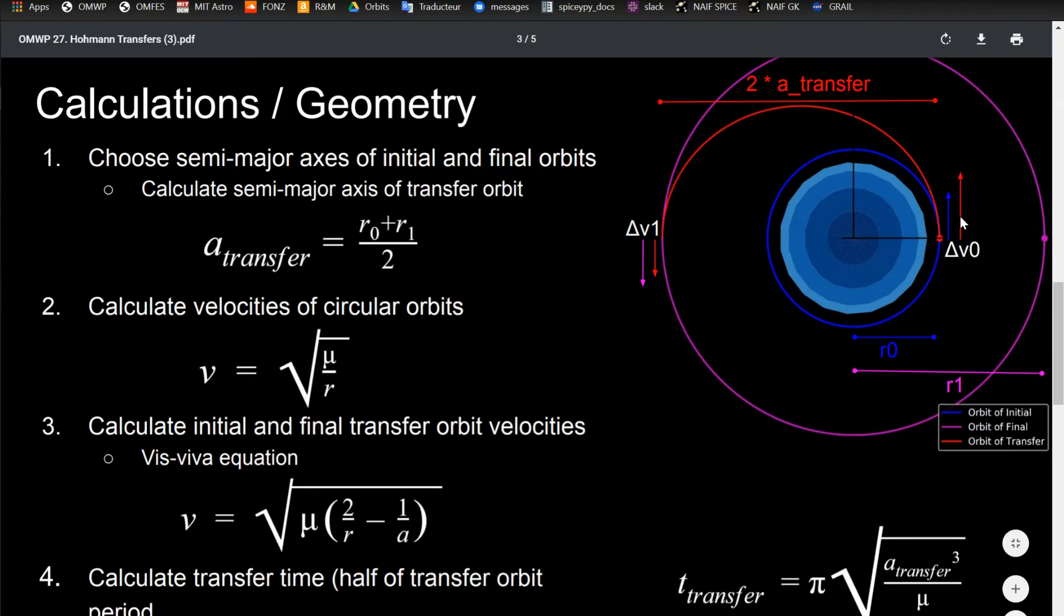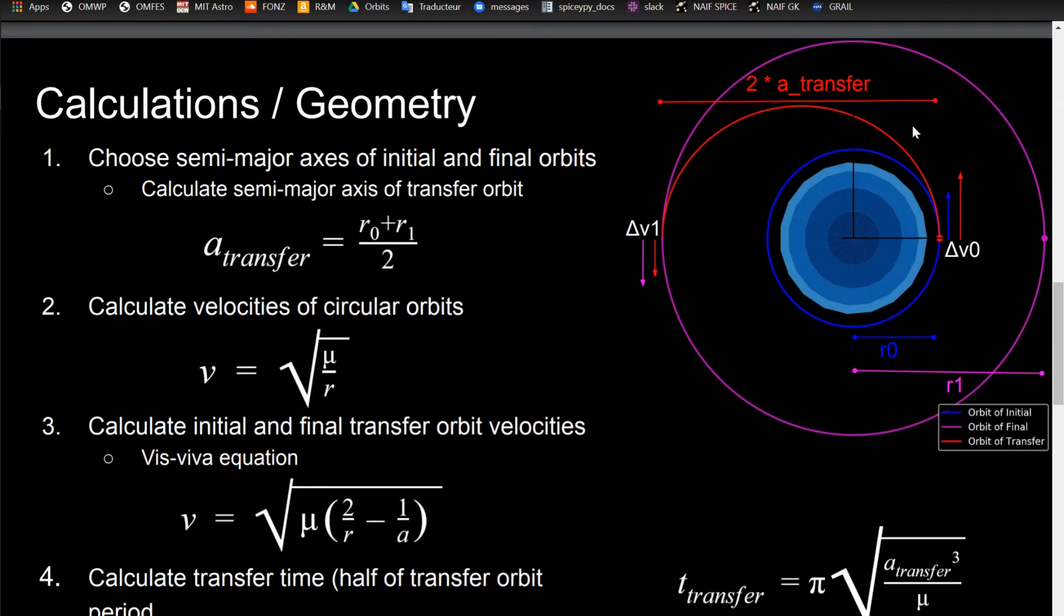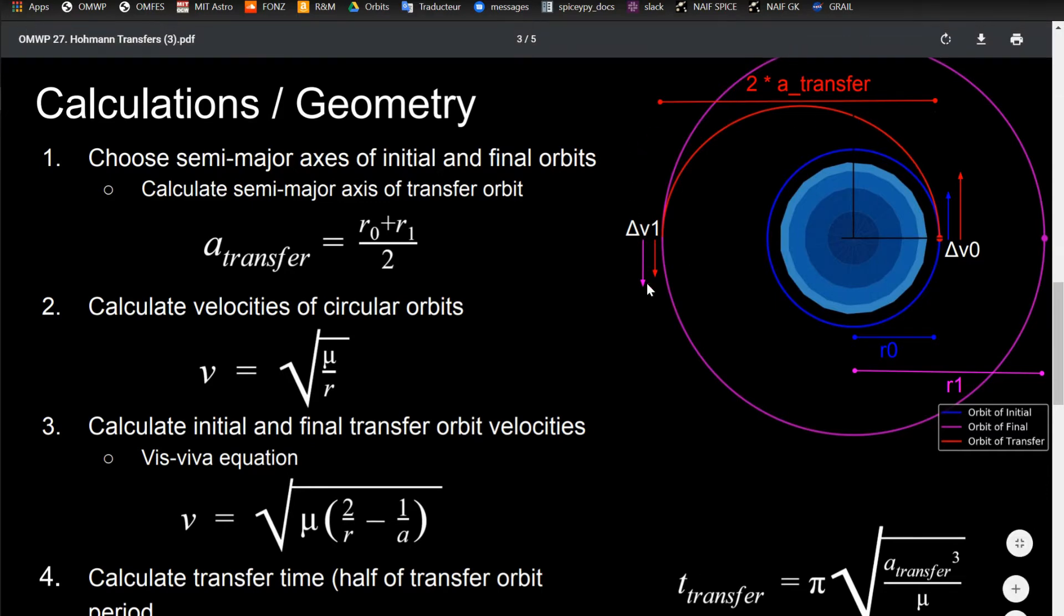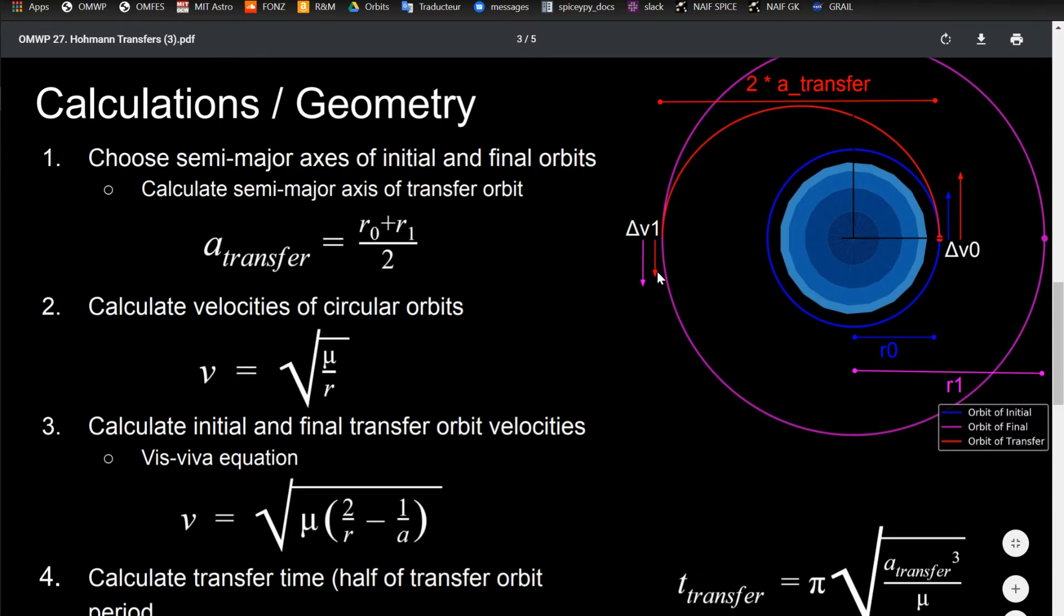You have your first delta-v value here. I wanted to show these arrows because the magnitude of your velocity in the circular orbit is going to be less than at this point in your transfer orbit, so that's what this represents - your first delta-v burn. Once your transfer orbit gets over to the final circular orbit, the transfer orbit velocity is going to be smaller than what you need to get into circular orbit, so you need to do that delta-v maneuver to catch up to the velocity you actually want.